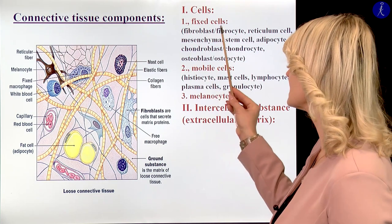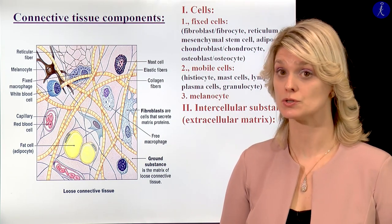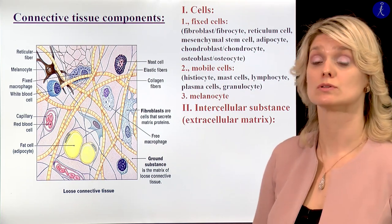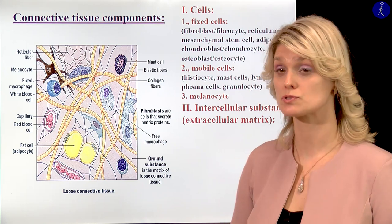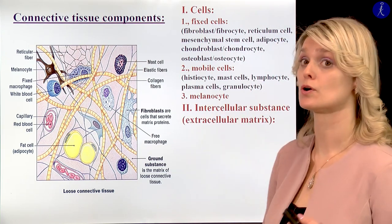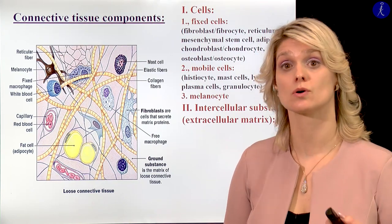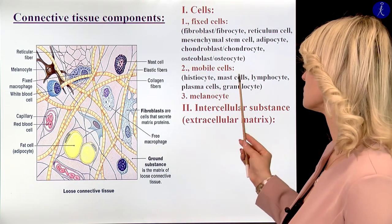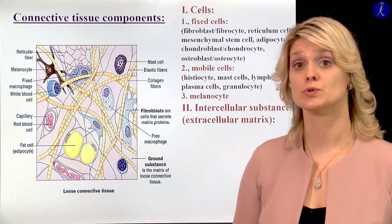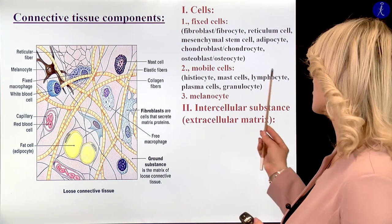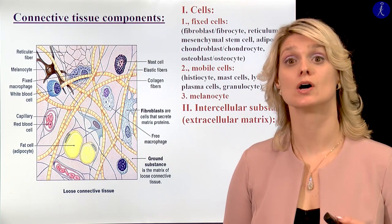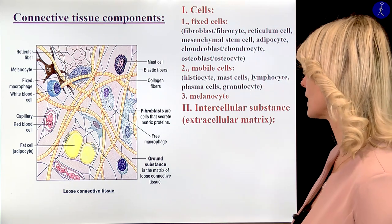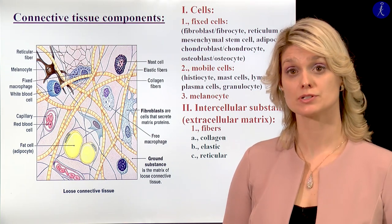We can talk about fixed cells and mobile cells in the connective tissue. We saw the fibroblasts, fibrocytes, the reticulum cells, the mesenchymal stem cells. Today I would like to talk more about the adipocytes, and you have a separated lecture from the chondrocytes, chondroblasts from the cartilage, and osteocytes, osteoblasts, the bony tissue. I also showed you the histiocytes and mast cells, and you have details about special white blood cells — lymphocytes, plasma cells, granulocytes — in the lecture about blood. I also showed you the characteristics of the different fibers of the connective tissue.